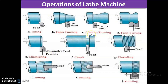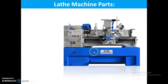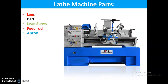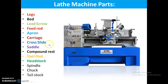Now let us see the lathe machine parts. Looking at the general diagram, the lathe machine has different types of parts: legs, bed, lead screw, feed rod, apron, carriage, cross slide, saddle, compound rest, tool post, headstock, spindle, chuck, and tailstock.